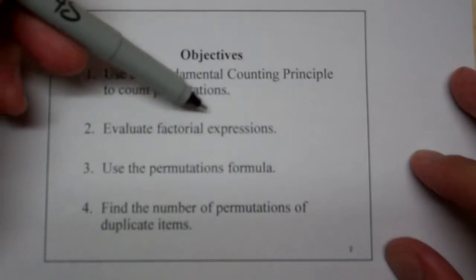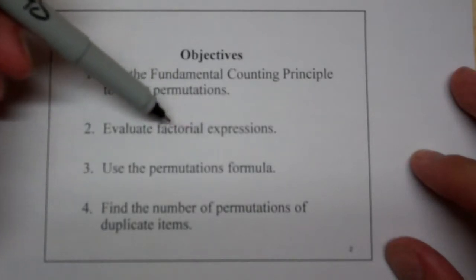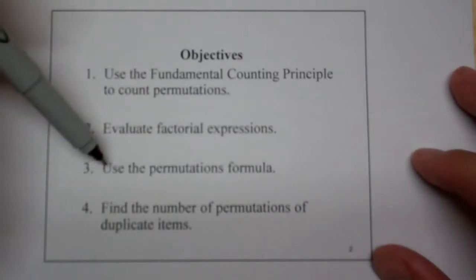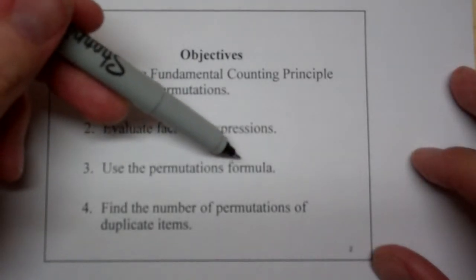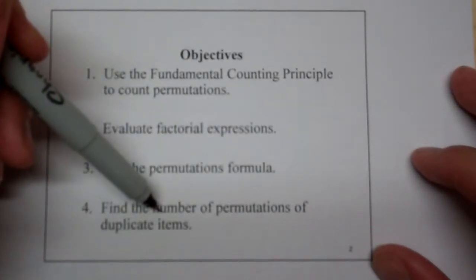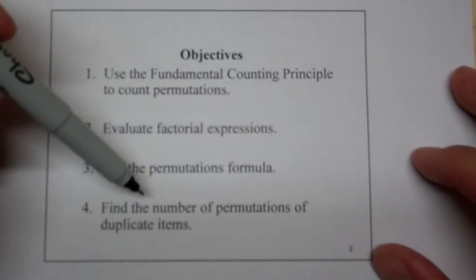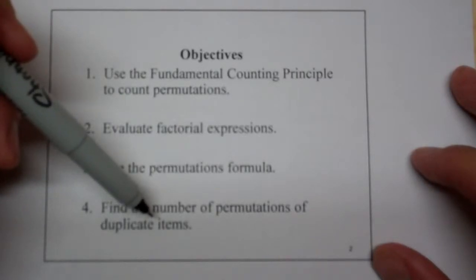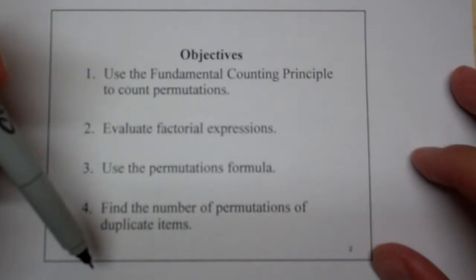We're going to be able to use the fundamental counting principle to count permutations. We're going to evaluate factorial expressions, so we're going to introduce a new mathematical notation. We're going to use the permutations formula, and then we're going to find the number of permutations of duplicate items. So when something occurs twice you don't have a unique order and so what do we do with that?